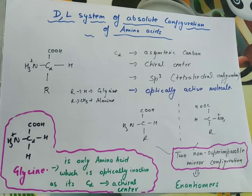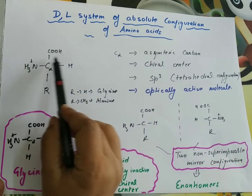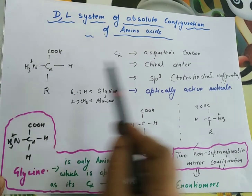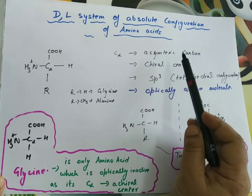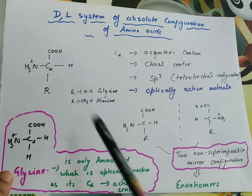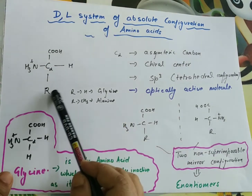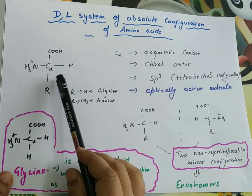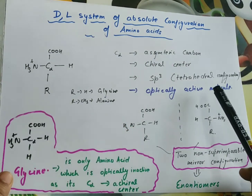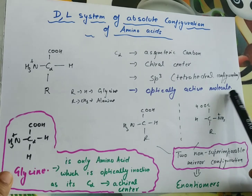Since C-alpha is attached to four different groups, it becomes a chiral center — that is, an asymmetric carbon with SP3 tetrahedral configuration. Because of this asymmetric carbon with four different attached groups, all amino acids become optically active molecules.